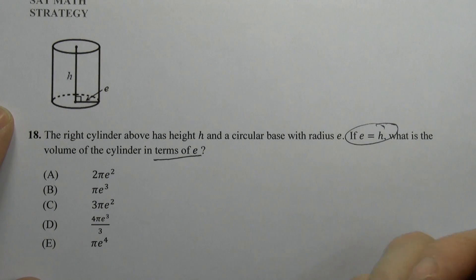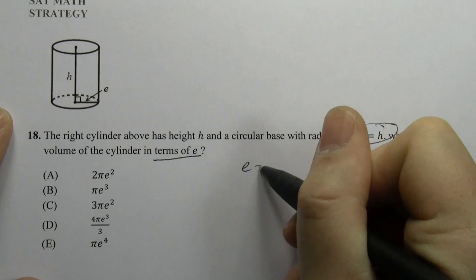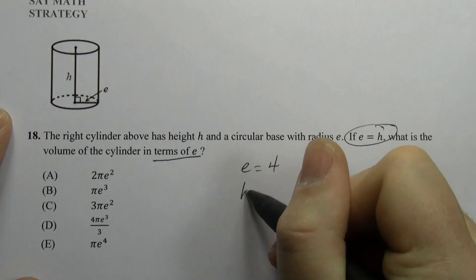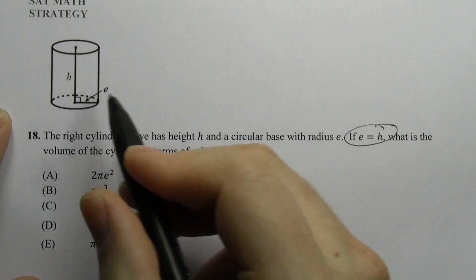So let's do that. First of all, what do you want e to be? Well, let's make e something easy again, something like, I don't know, 4. So let's say e equals 4. I mean, h equals 4.